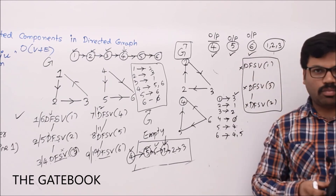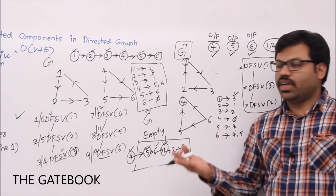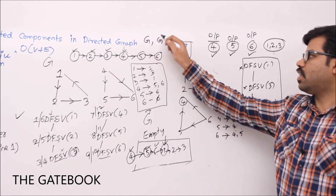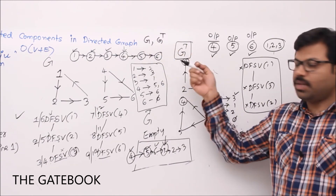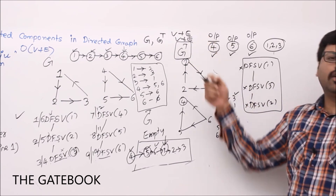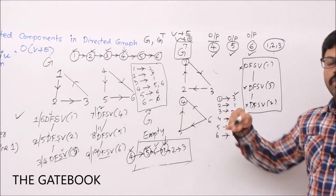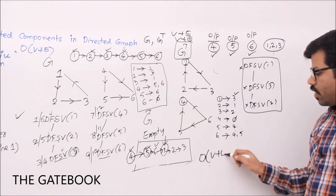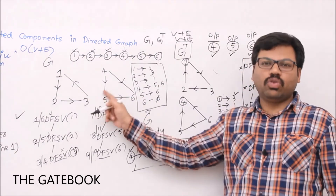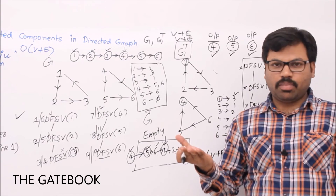This is how Kosaraju's algorithm finds connected components. For time complexity: we perform DFS twice — once on G and once on G transpose. The number of edges in G and G transpose are the same, so the total time is O(V+E) + O(V+E), which is effectively O(V+E) overall.